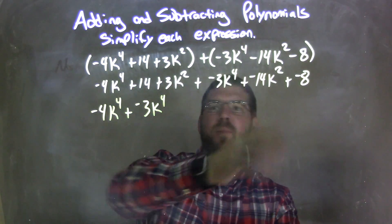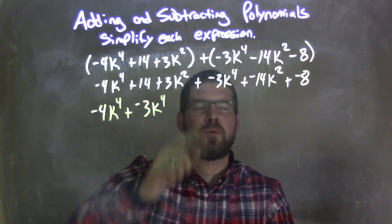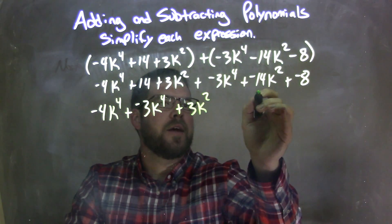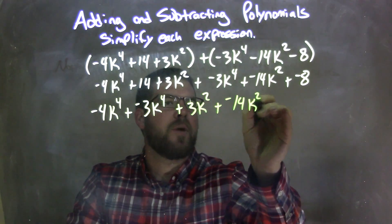We don't have anything to the 3rd power, but let's look to the 2nd power. I see a 3k squared. So we have plus 3k squared next. And then this one here is plus a negative 14k squared.